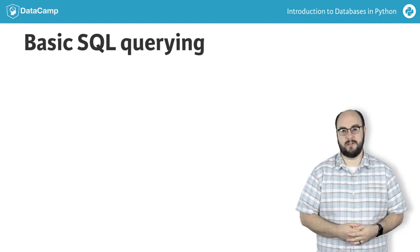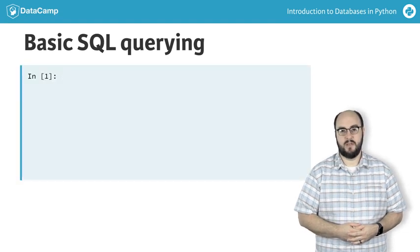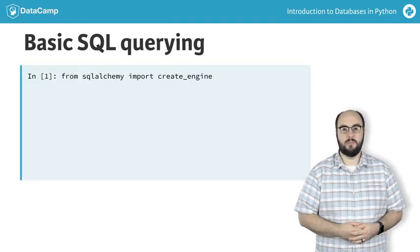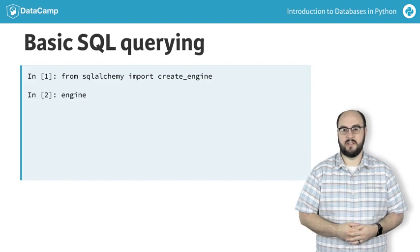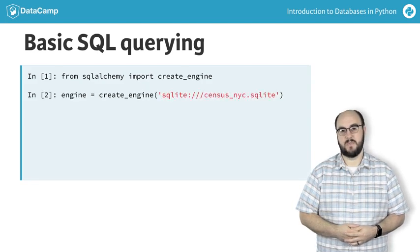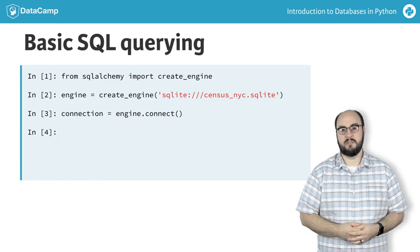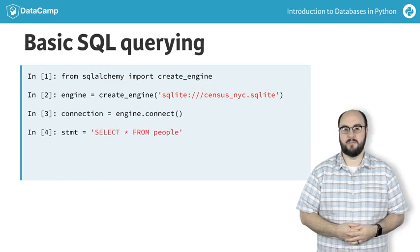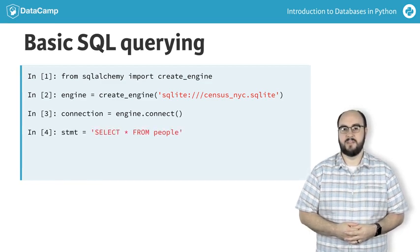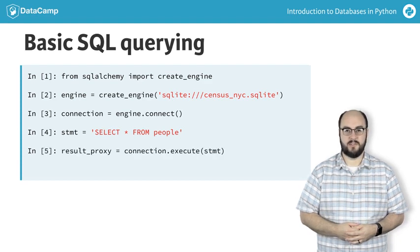Let's execute this last query. We'll begin by importing createEngine and creating an engine. Next, we'll establish a connection by using the connect method on the engine. Then we can define our SELECT statement and pass it to the execute method of the connection. This gives us an object that we can use to fetch the results, which we'll be assigning to the variable resultsProxy.